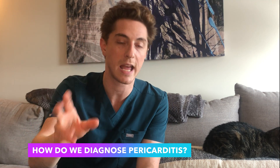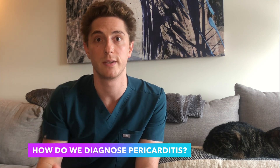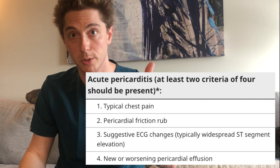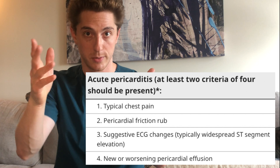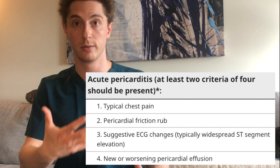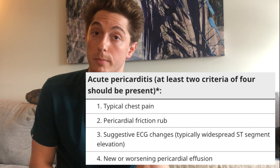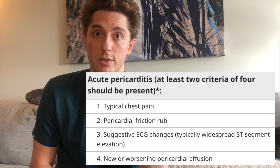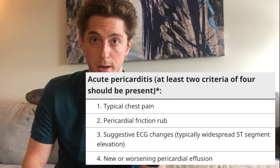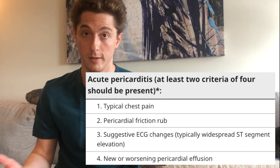So how do we diagnose pericarditis? This is a great example of the importance of a good history and physical. To diagnose pericarditis, you need two of the following four criteria: the classic chest pain — worse when laying down or taking a deep breath, better sitting up or leaning forward; classic EKG changes consistent with pericarditis; a new or worsening pericardial effusion; and if you hear it, the pericardial friction rub.